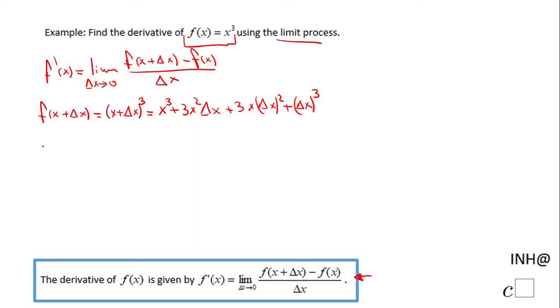So now we can go back to f' and we're going to have the limit when Δx approaches zero of [x³ + 3x²Δx + 3xΔx² + Δx³ - f(x)] which is [x³ + 3x²Δx + 3xΔx² + Δx³ - x³].